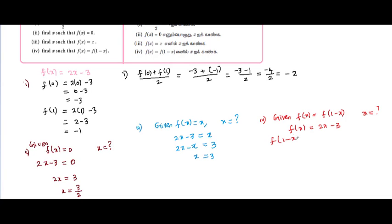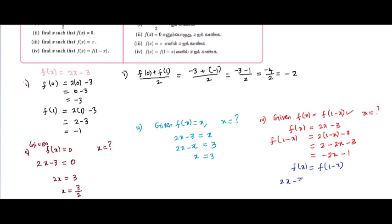Find f of 1 minus x. Substitute: 2 into 1 minus x, minus 3. 2 ones are 2, 2 into x is 2x, so 2 minus 2x minus 3. The condition is f of x equal to f of 1 minus x, so f of x is 2x minus 3.